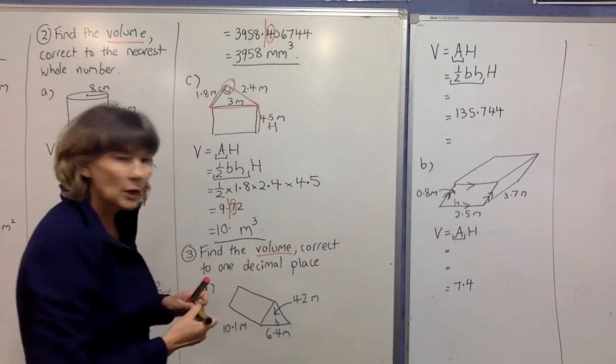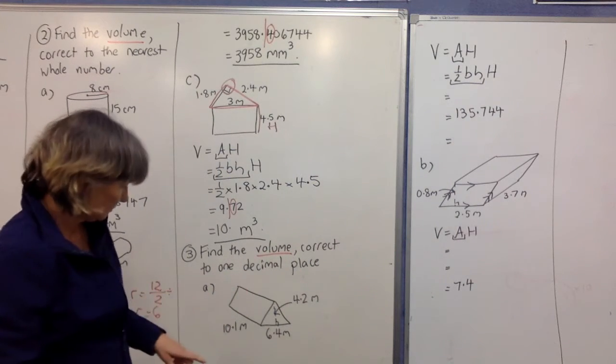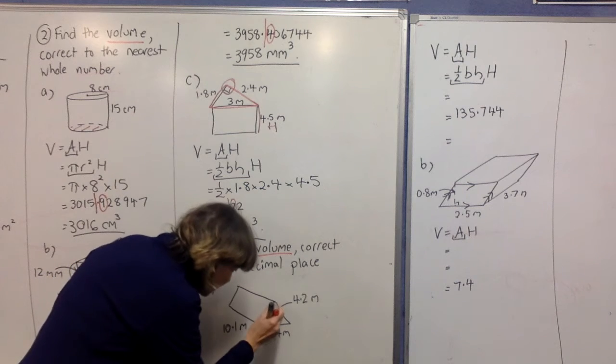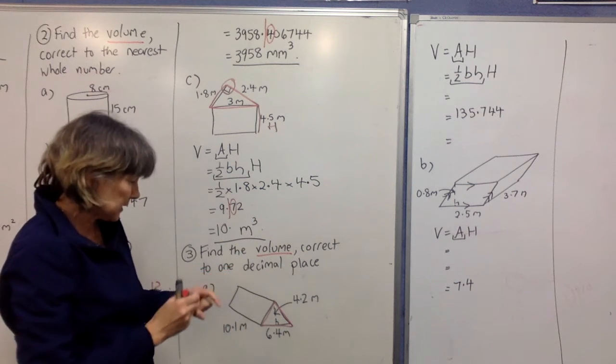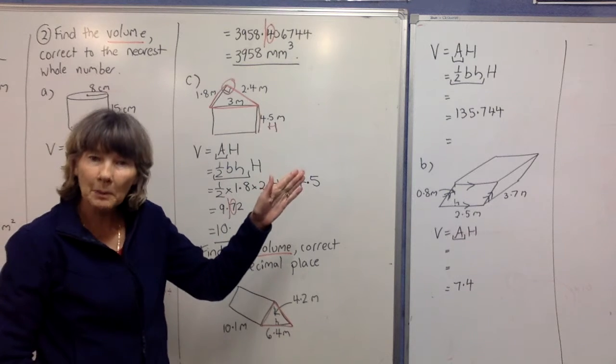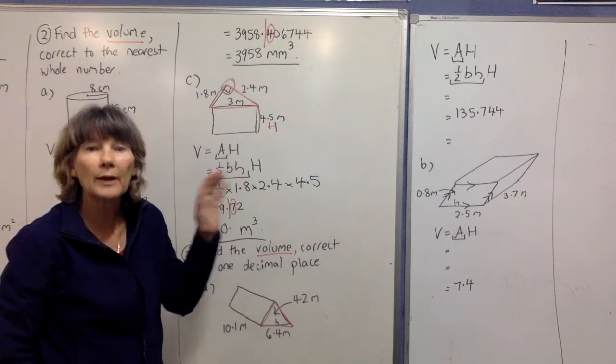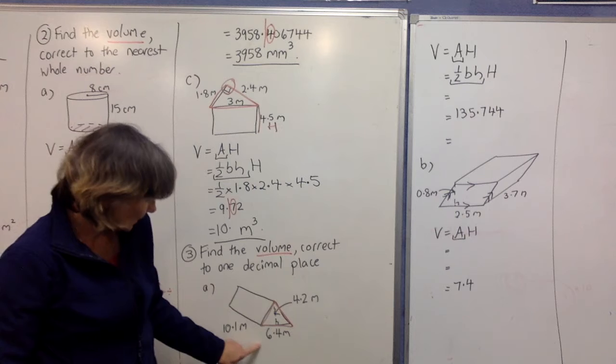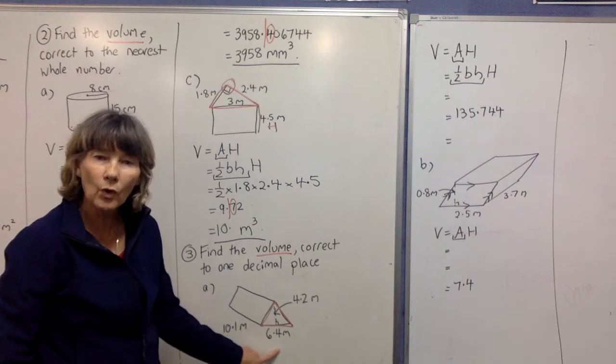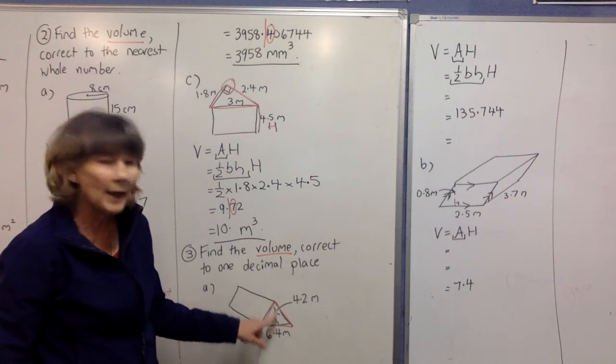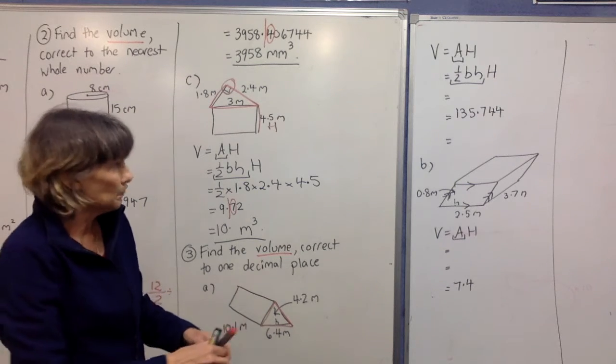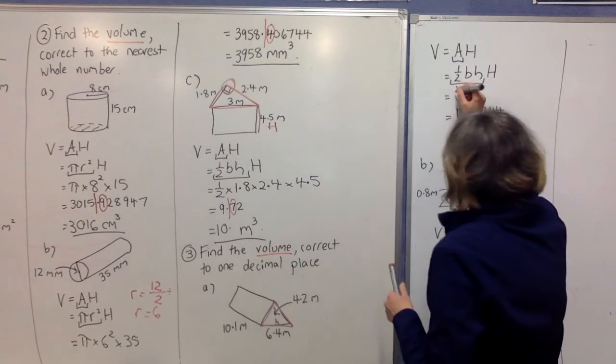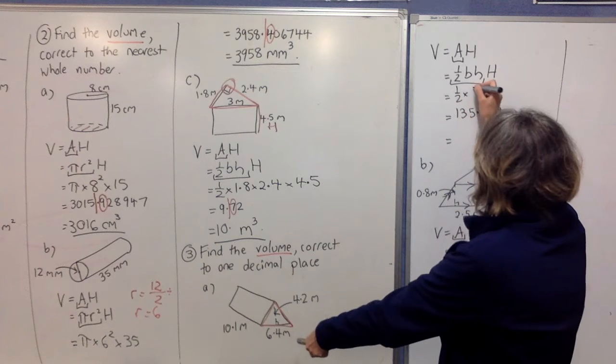Looking at our diagram down here, our triangular base is here. It's always a good idea to go around it with your red pen so you can see it. In the first part, we want the base and the perpendicular height of that base shape. Our base is 6.4, our perpendicular height coming off your base shape at right angles is 4.2. So we're going to put in those: half times 6.4 for the base, times 4.2 for the perpendicular height of the triangular base.